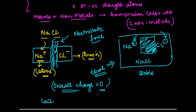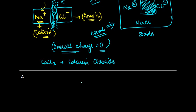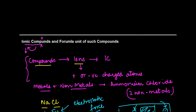Some other examples of ionic compounds are calcium chloride, CaCl₂, and copper sulfate. There are quite a few of them — you can refer to any textbook to get the hang of these.